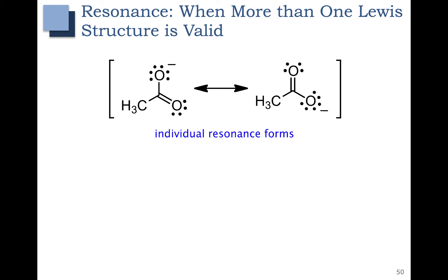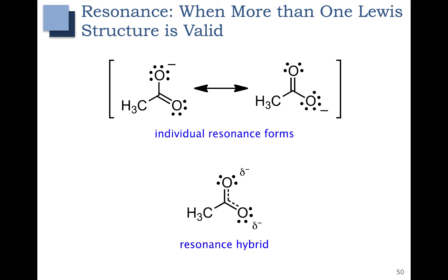Neither the left Lewis structure nor the right Lewis structure represents the actual structure of the molecule. In reality, the molecule exists as what we would refer to as a resonance hybrid, where the top oxygen has a partial negative charge, or a delta minus, and the bottom right oxygen also has a delta minus. These dotted lines represent a partial double bond - we have something more like a bond and a half between carbon and each oxygen.